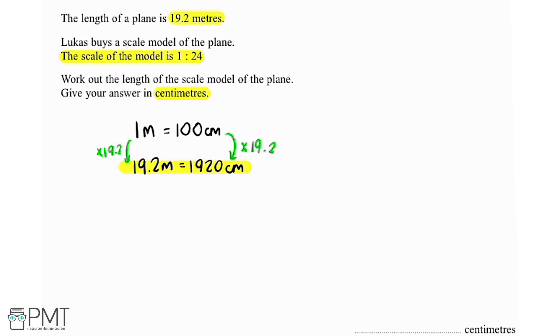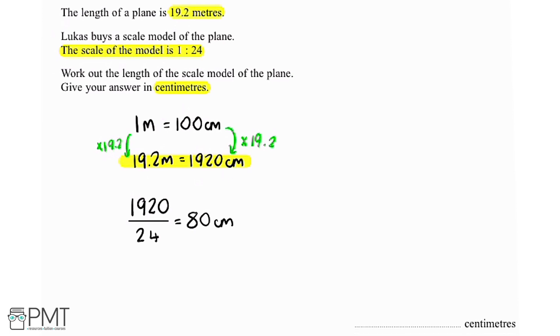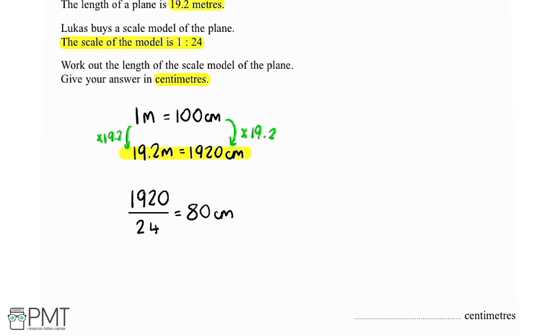So we're going to take our length of the plane being 1920. If we divide that by 24, because we know the model is 24 times smaller, that gives us 80. And because we work in centimetres here, our answer is in centimetres. The length of the scale model of the plane is 80 centimetres.